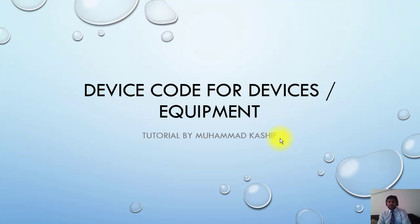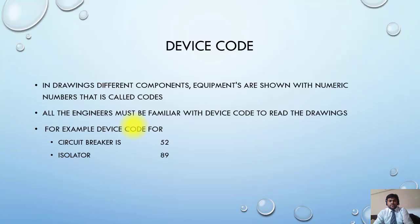This is also very important and basic. Professional engineers should be able to understand device codes. In drawings, different components and equipment are shown with numeric numbers that are called codes. All engineers must be familiar with device codes to read the drawings.